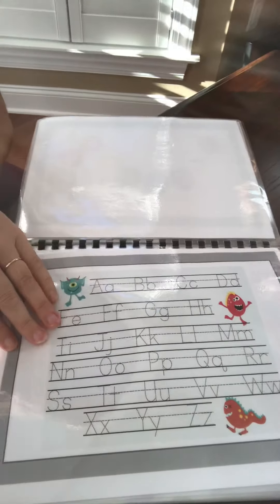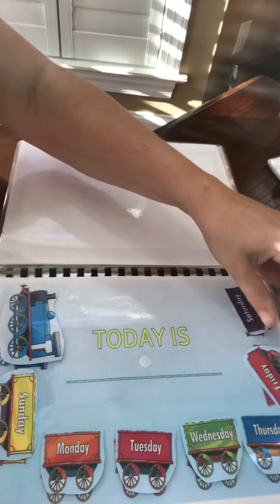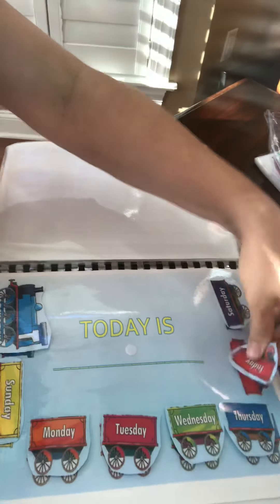This one's a little bit more advanced, but it's like a dry erase, and you can write all the letters and then go over it again with him. It's probably a little advanced for him, but that's down the road. This is kind of basic, the day of the week. So, today is Friday.